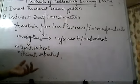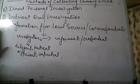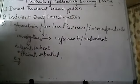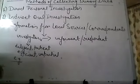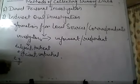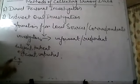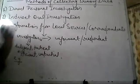For example, if an investigator wants to know the economic condition of the workers in a factory, and he directly meets those workers and asks them about their economic condition, then that method is known as direct personal investigation.